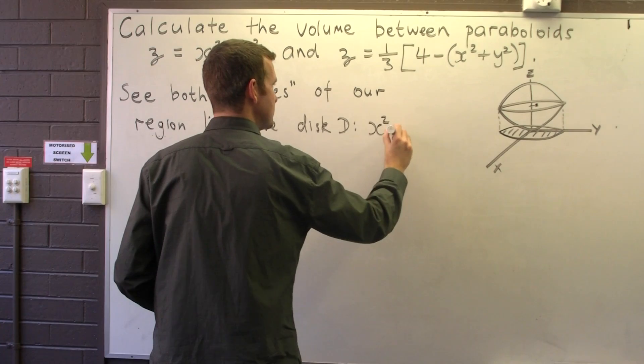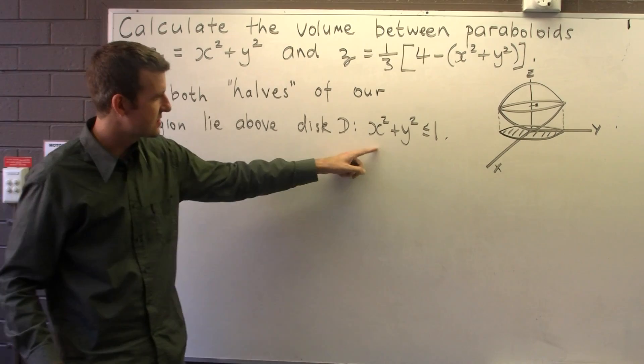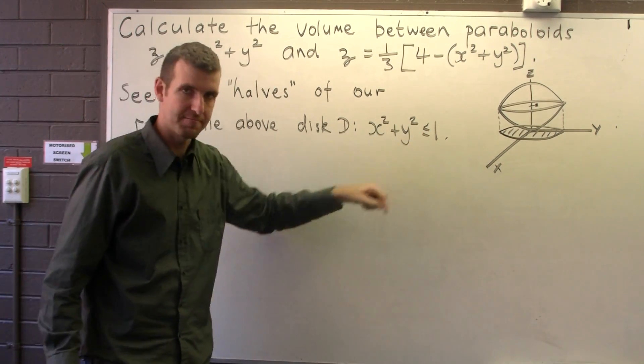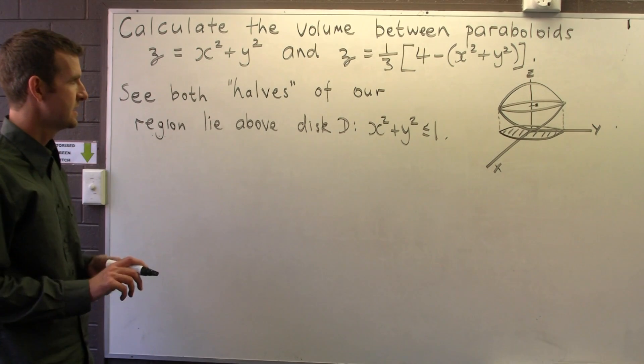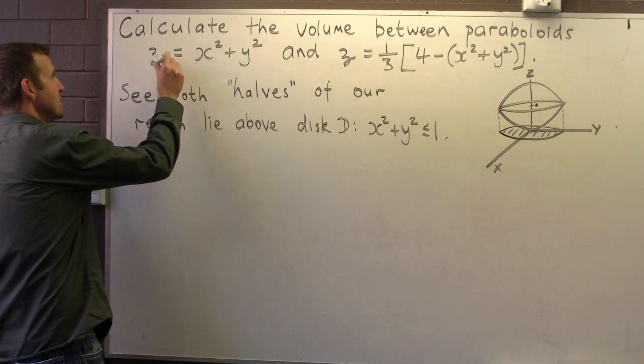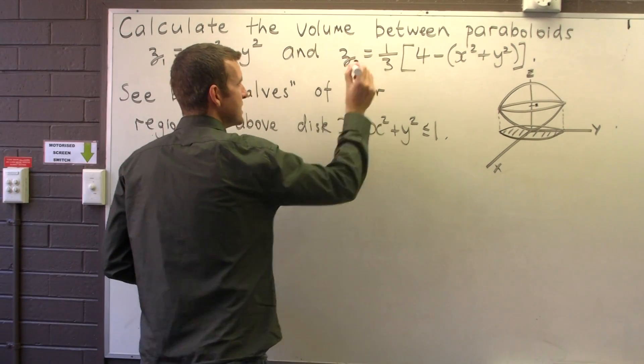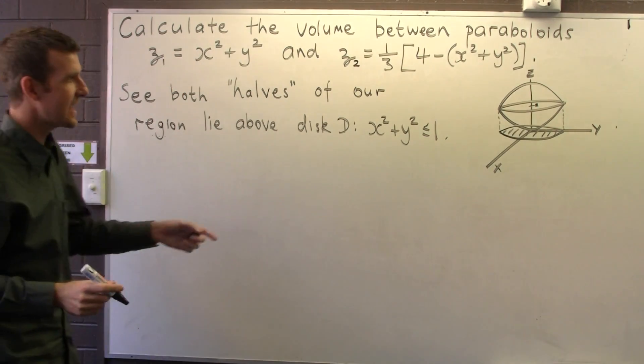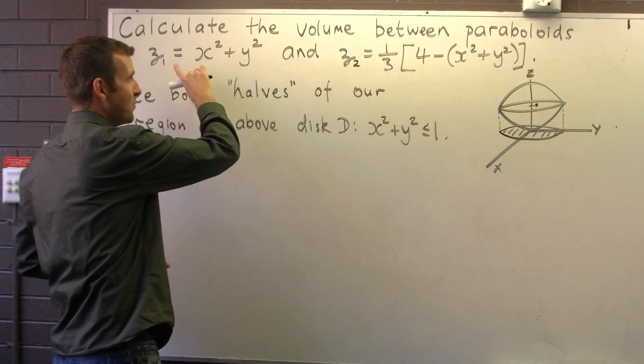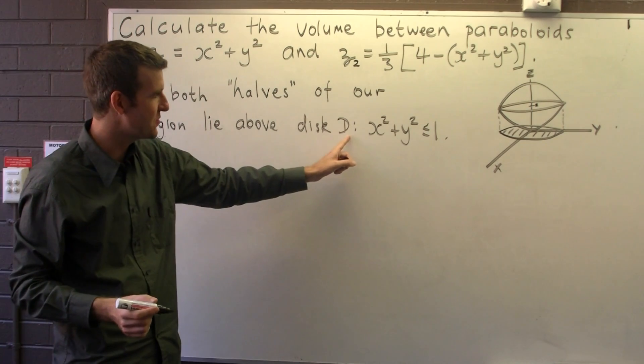We're trying to call D. So this shaded region is D and this is its description. If I go back and slightly abuse the notation here by calling this z1 and z2, to calculate the area between the surfaces all we do is take z1 from z2 and look at the double integral over the region D.